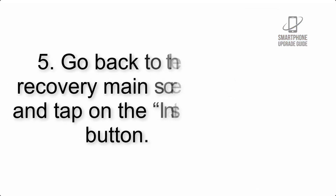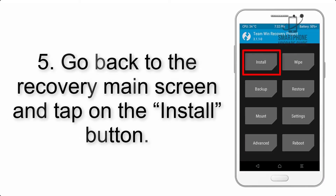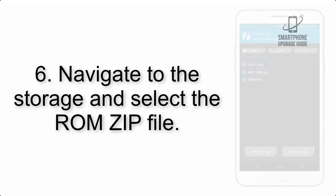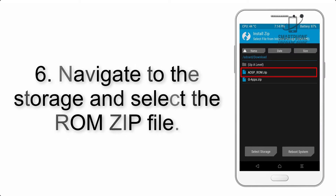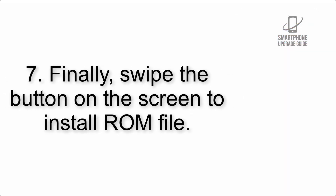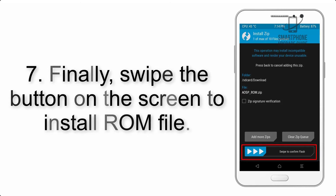Step 4: Swipe the button to wipe the device. Step 5: Go back to the recovery main screen and tap on the Install button. Step 6: Navigate to the storage and select the ROM zip file.